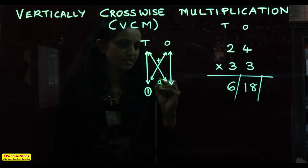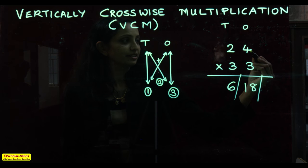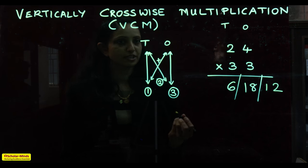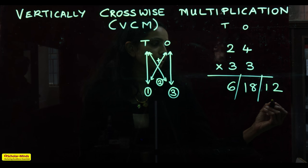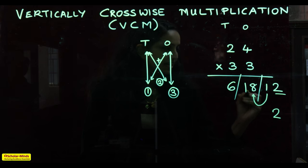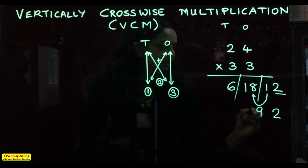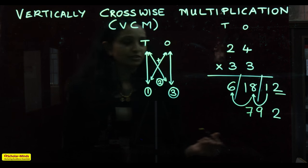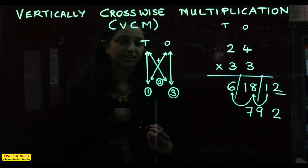The last step is taking the product of the digits in the ones place: 4 and 3, which gives 12. By rule, we are only allowed to keep 1 digit in each placeholder, so we keep 2. We take the 1 and add it to 18, making 19. We keep the 9 and carry the 1 to the next place value: 6 plus 1 is 7. So the answer for 24 multiplied by 33 is 792.